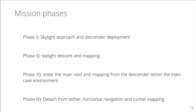The mission consists of four phases. Phase 1 is the skyline approach and descender deployment. Phase 2 is the skyline descent and mapping. In phase 3, we enter the main void and do mapping from the descender, tethered, of the main cave environment. In phase 4, we detach from the tether for horizontal navigation and tunnel mapping.